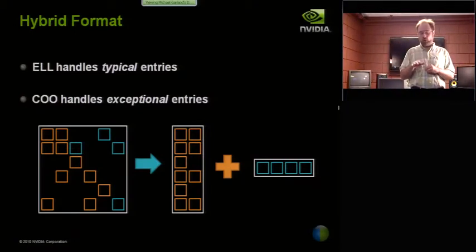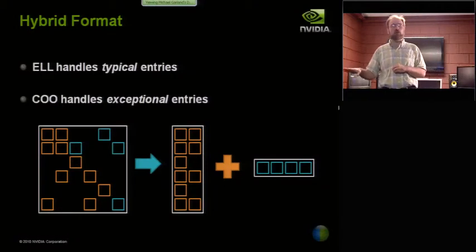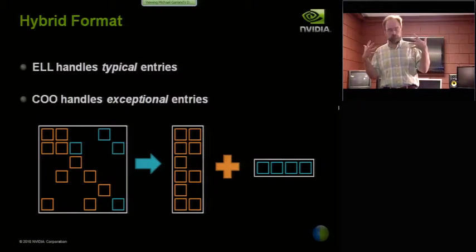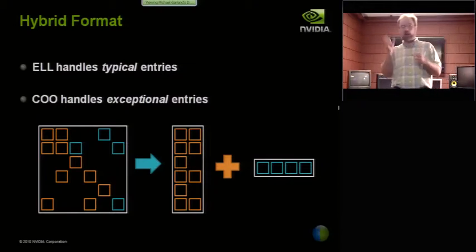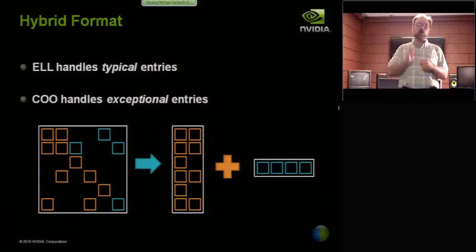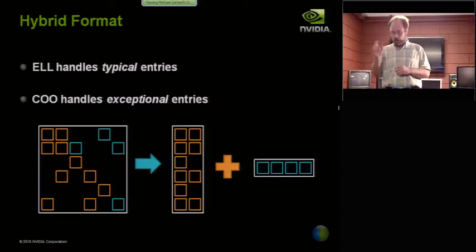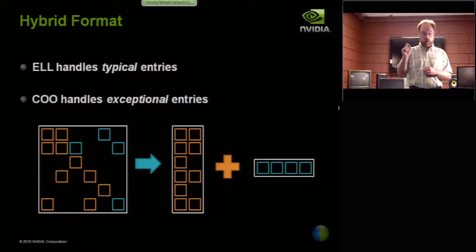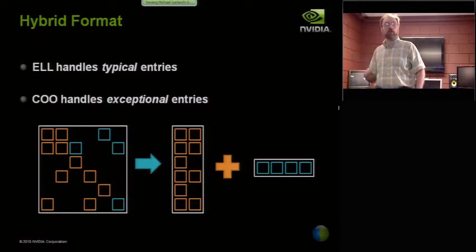The coordinate format I just told you about doesn't really care what the row length distribution is. But as I'll show you in a minute, it performs at a substantially lower level than the ELL or vector kernels. The ideal is really to combine these two things. I can pick some K that I'll call the typical row length, and I'll pack all the non-zeros up to size K into an ELL portion of the matrix, which you see on the left there in orange. And then I'll take all the exceptional entries that fall off the edge and store them in a coordinate format off on the side.